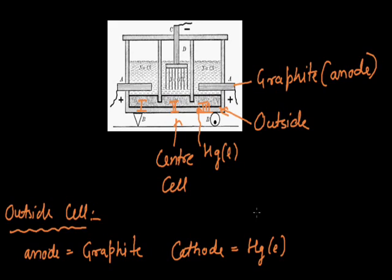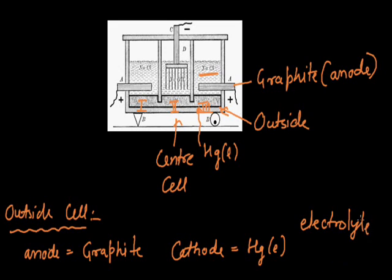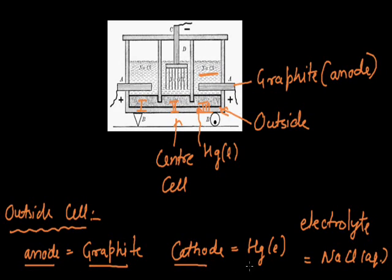The solution used is NaCl solution. The anode is graphite, and we are working with NaCl solution. NaOH is produced from NaCl in this cell.